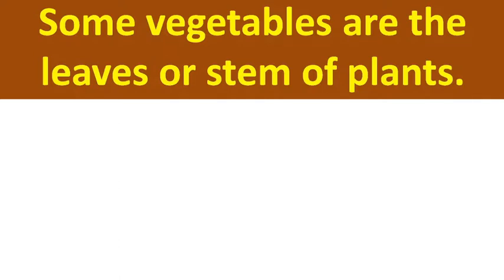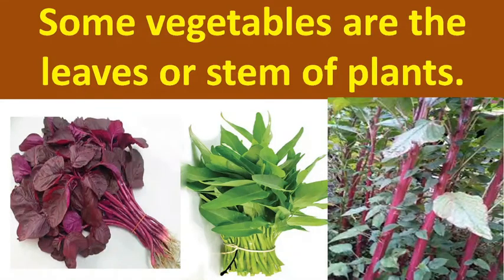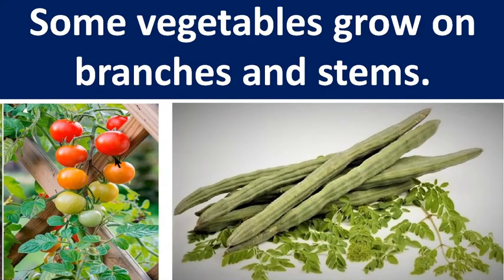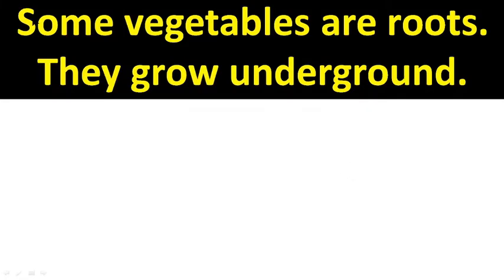Some vegetables are the leaves or stem of plants. We can see these vegetables are leaves or stem of plant. Some vegetables grow on branches and stems.